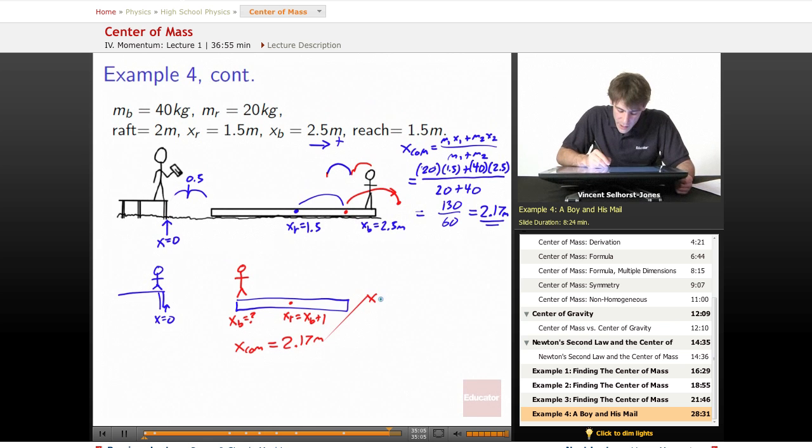So if we know that x center of mass is equal to m1 x1 plus m2 x2 all over m1 plus m2, well, we know what our center of mass is. It's 2.17 meters. Mass 1, still the same mass. It's 20, but where is it? It's xb plus 1.